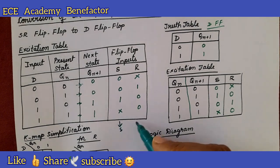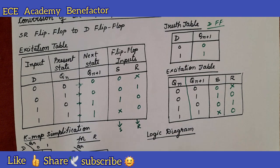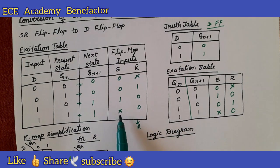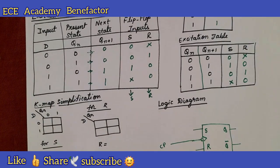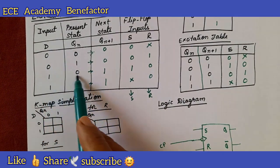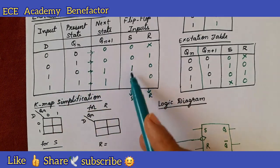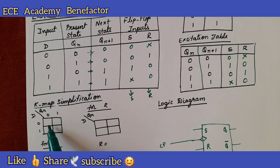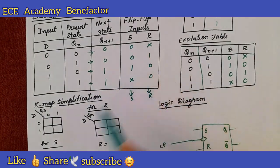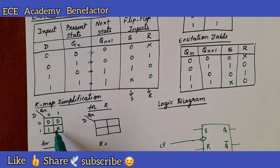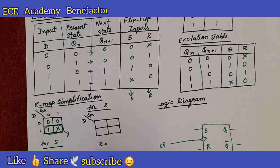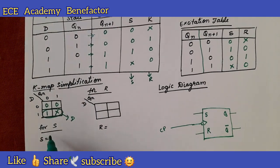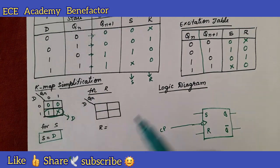Now we need to solve two K-maps: one for S and another for R. It will be a two-variable K-map based on inputs D and Q_n. For the S K-map, the values are: 0, 1, x, 0 — and 0, 1, x, 0 for the respective cells. One pair is formed, and the name of that pair is 1, which corresponds to D. Therefore, S = D.